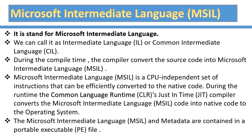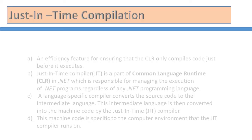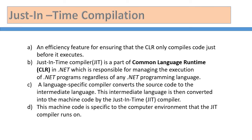Just-in-time compilation is an efficiency feature ensuring that the CLR only compiles code just before it executes. The JIT compiler is a part of the CLR in .NET and is responsible for managing the execution of .NET programs regardless of the .NET programming language used. A language-specific compiler converts source code to intermediate language, which is then converted into machine code by the JIT compiler. This machine code is specific to the computer environment that the JIT compiler runs on.